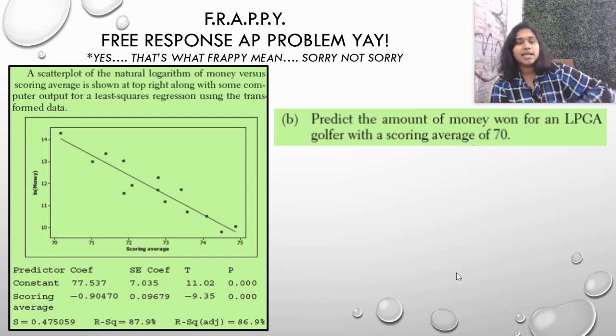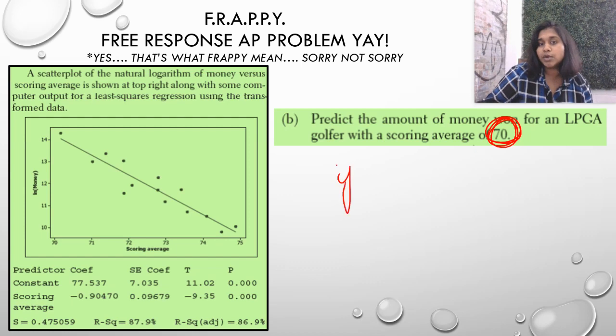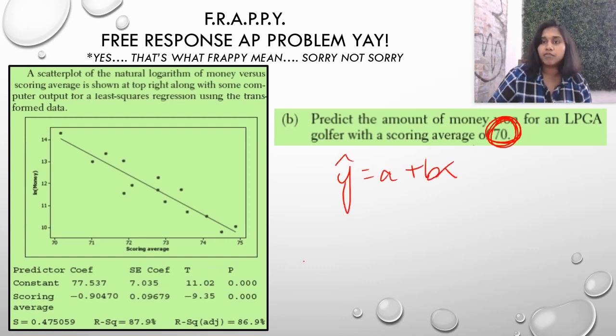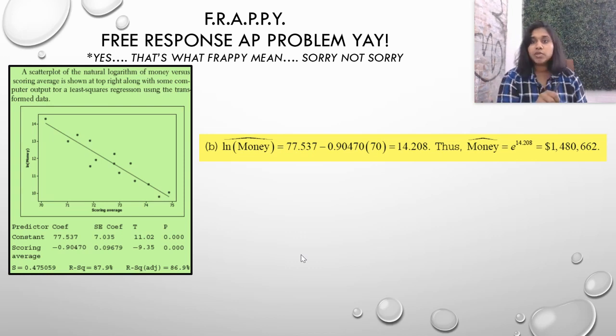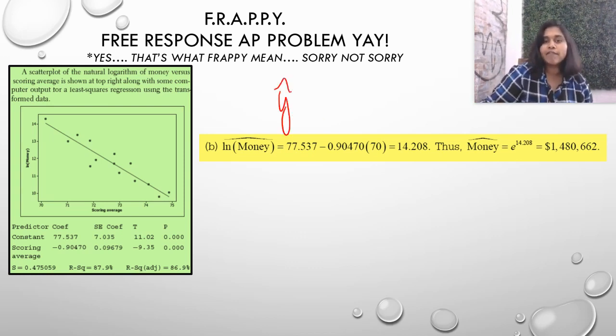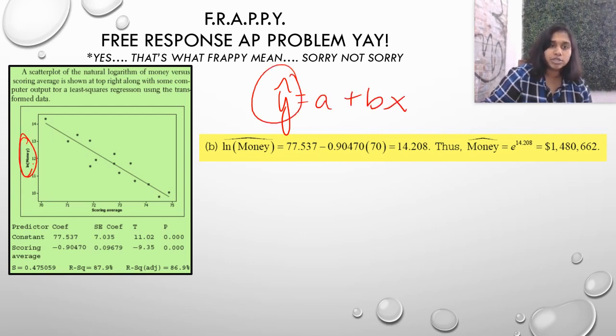It became a linear line. So, they gave us a mini tab info and they want us to predict the amount of money won for an LPGA golfer with a scoring average of 70. So, in order to plug in this 70, we need our y hat formula. So, let's go ahead and jump into that. So, I've pulled up the answer so you can read along as you pull the information.